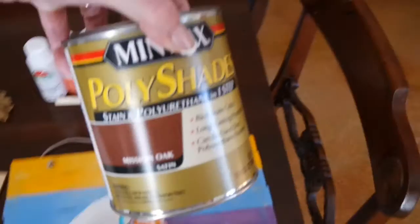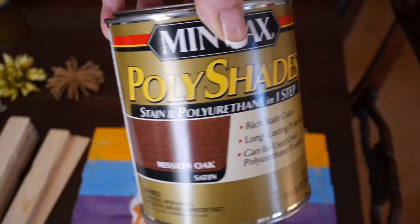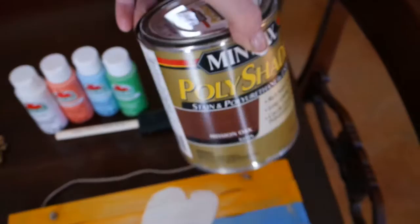Now the stain I'm going to use, you do not have to use anything this expensive. This came from Home Depot and we're in the process of refreshing our cabinets. This just happens to be something that was on my counter, but all this is, it's just kind of a stain all in one. You wipe it on, you wipe it off, but any stain will do. This is Minwax Poly Shades Mission Oak, if you're just curious what I use.